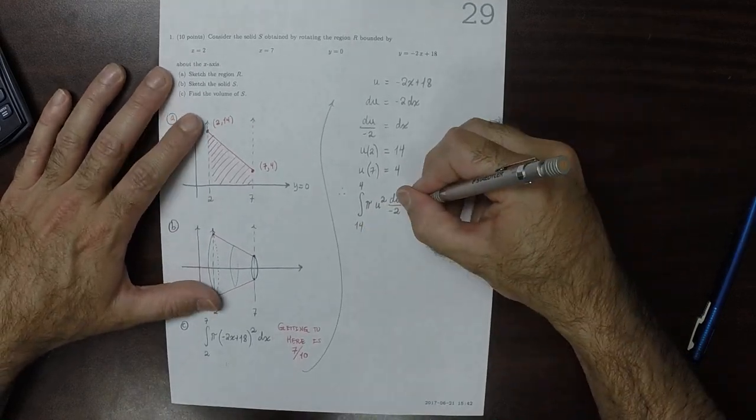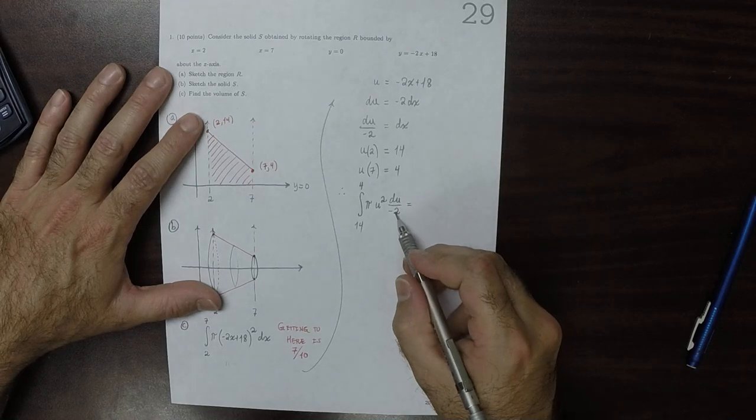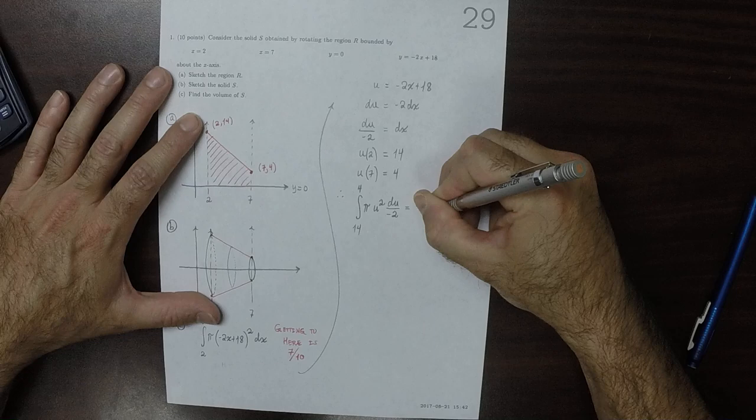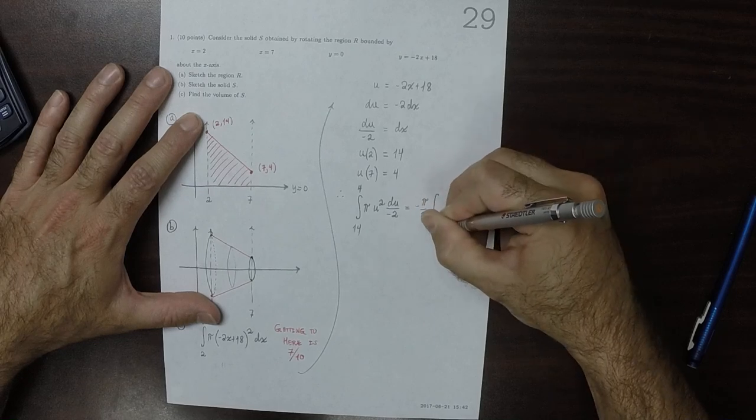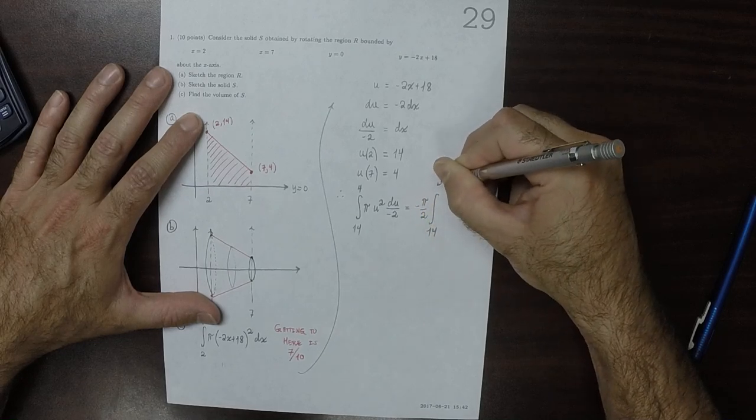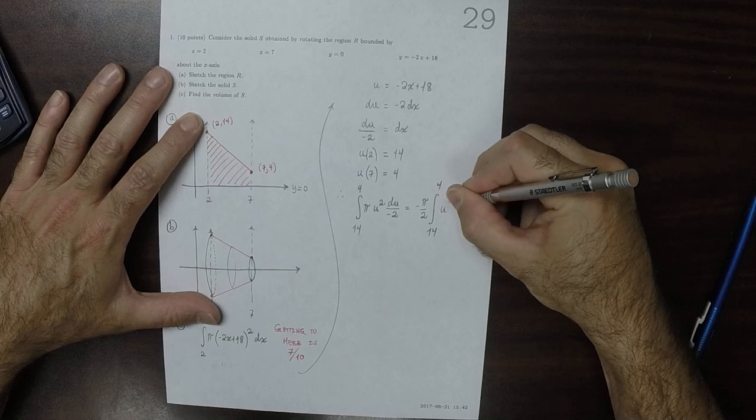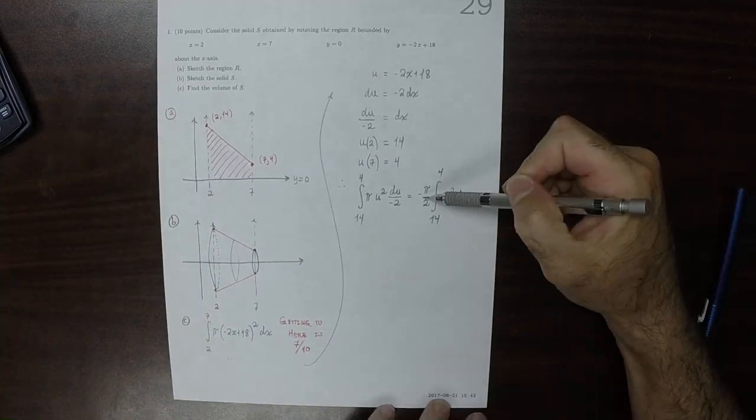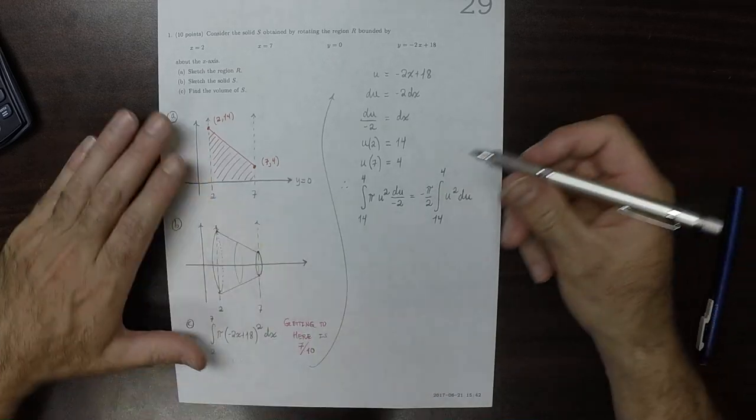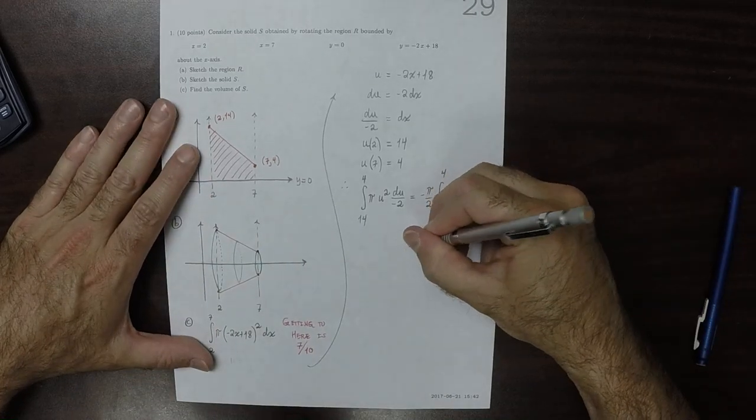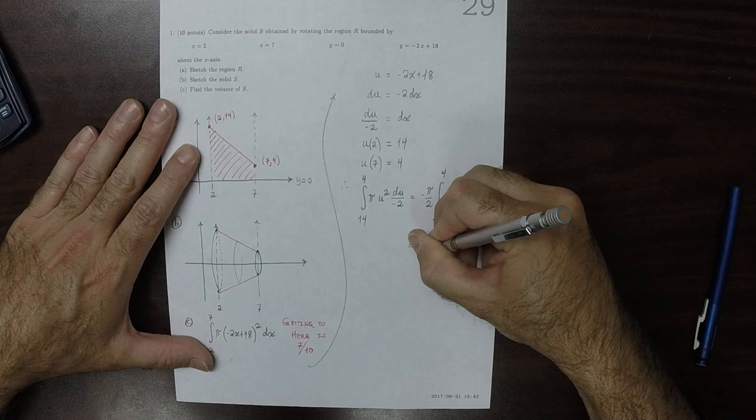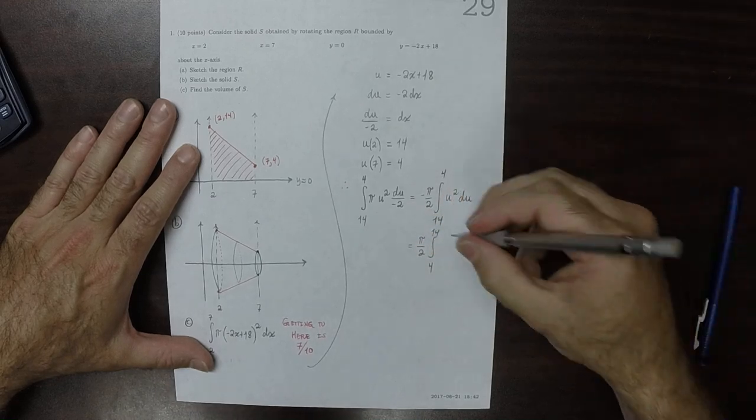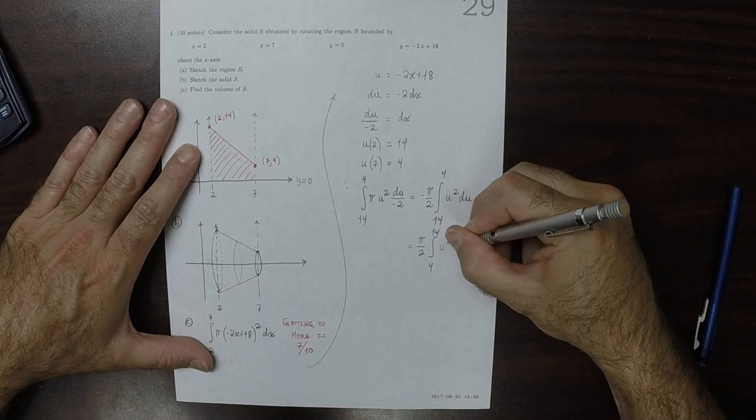Well, that's equal to... I'll factor out the division by negative 2 and the pi. That's negative pi halves integral 14 to 4, u squared du. And now I'll switch the order of integration by spending that negative and get pi over 2 integral 4 to 14. So now it's back to the order that we're used to.